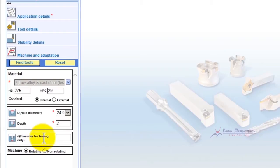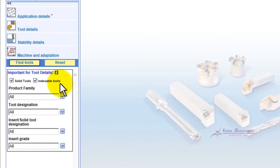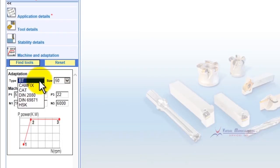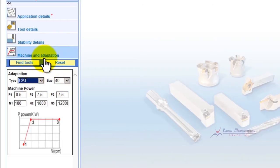D Diameter for Boring Only means Boring Only — it's going to be a rotating tool. Let's go to Tool Details. Here you have the option to pick Solid Tools or Indexable Tools; for right now I'm just going to leave it on All. We'll go to Stability Details — whether you have good clamping, whether you're drilling on a slope or not. Then we click Machine and I'm going to hit Cat 40.